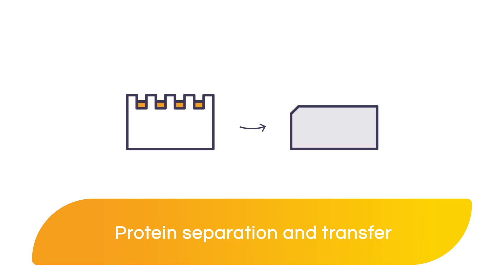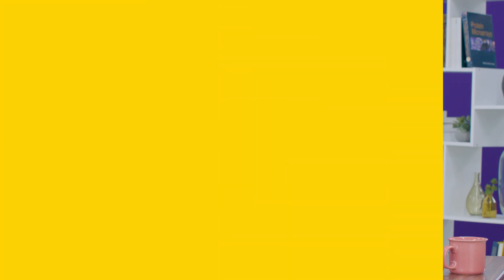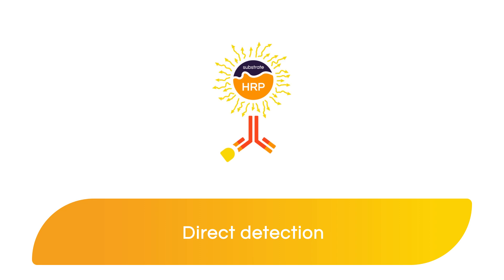Proteins from a cell or tissue lysate are separated on a gel by molecular weight and the proteins are then transferred to a membrane. There are two ways to then visualize the protein of interest. The first is using direct detection where a primary antibody will recognize and bind to the protein of interest on the membrane. The primary antibody is directly labeled with an enzyme, so once substrate is added to the membrane, the substrate is converted to light and that light can then be measured.